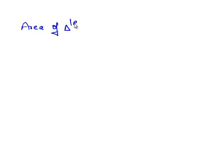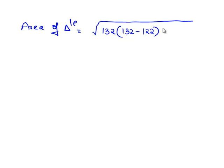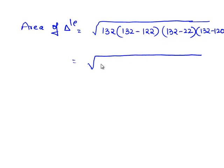Now let us substitute this into the formula. The area of the triangle is equal to the square root of s, which is 132, times (132 minus a, which is 122), times (132 minus b, which is 22), times (132 minus c, which is 120). So we are left with the square root of 132 times 10 times 110 times 12.